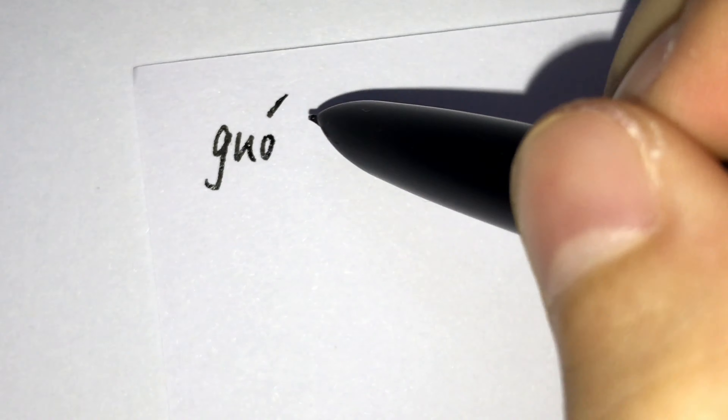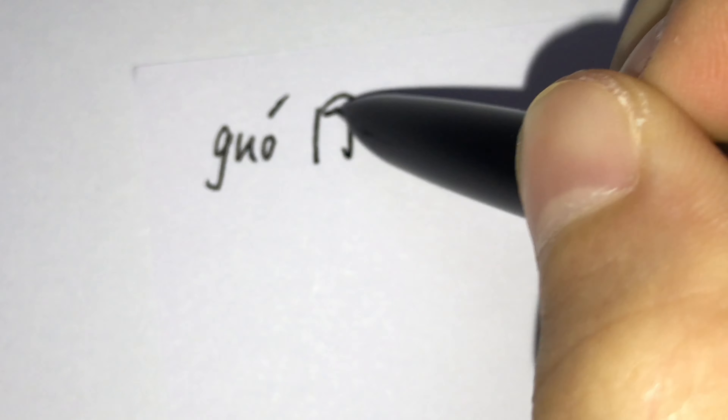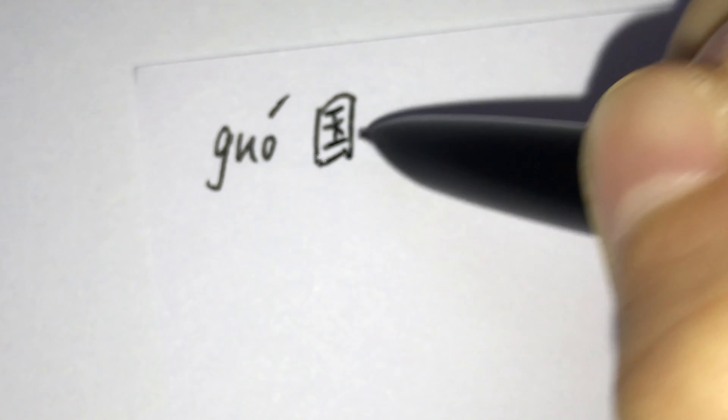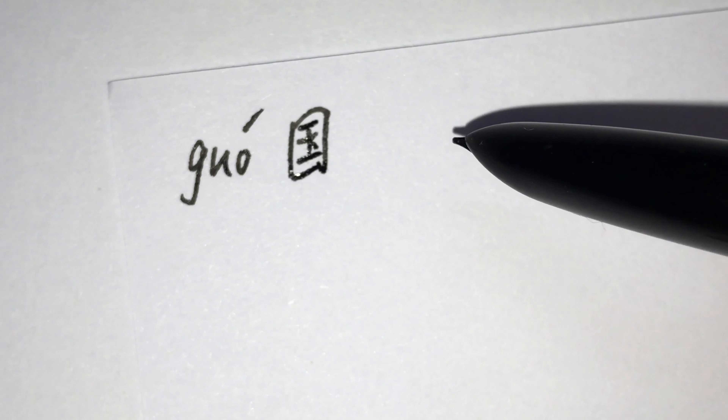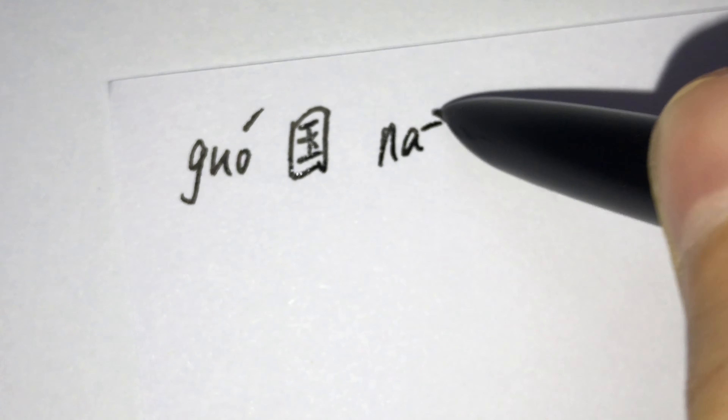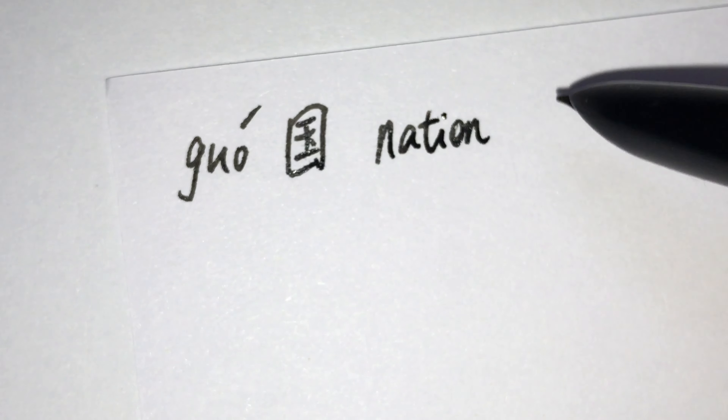Hi, welcome to my channel. In this video, follow me to write the Chinese character 国 (guó) in cursive. Now let's get started. 国 — it means nation or country.